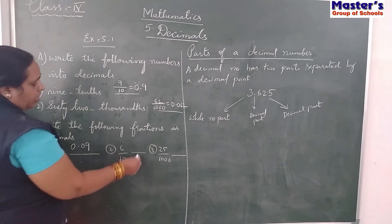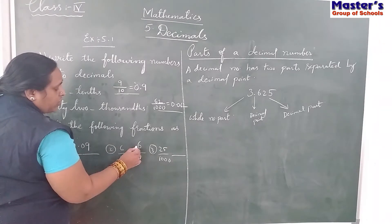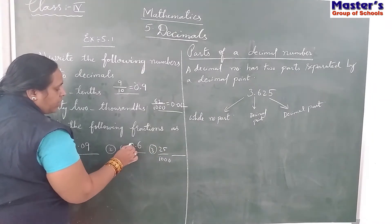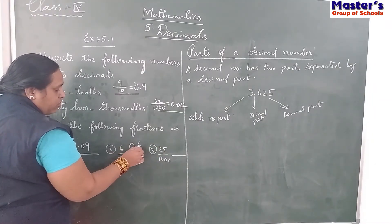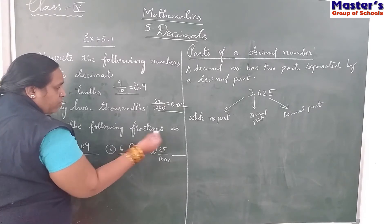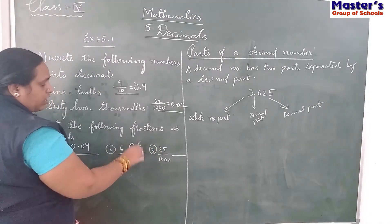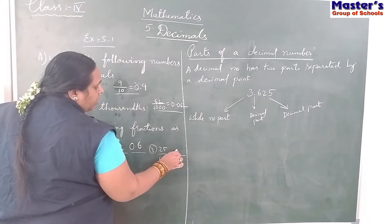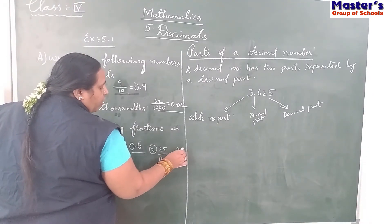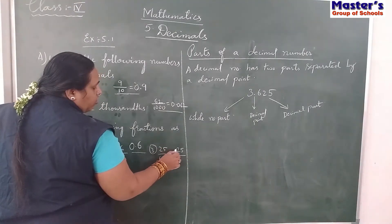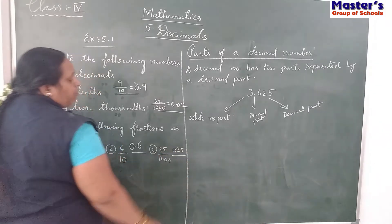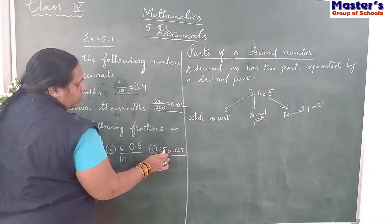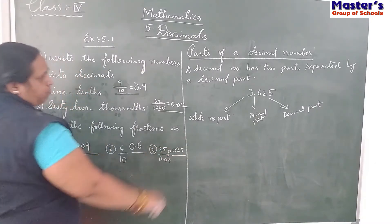Similarly, 6 by 10. 6 by 10 means after 1 digit - 1 zero means after 1 digit, the point is there. From left side, first you should write the same number as the numerator, and from left side after 1 digit, the point is there. Now here, 25/1000th - after 3 zeros, but here we are having only 2 digits. So you keep 1 more 0, make it as 3 zeros and keep the point.